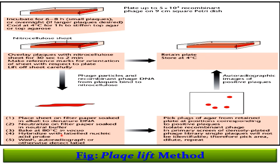Hybridize with a labeled nucleic acid probe. Wash, autoradiograph, and detect the label. Pick the plaque of agar from the retained plate at the position corresponding to the positive plaques. Isolate recombinant phage in the primary screen of the densely plated phage library. Single plaques will not be identifiable, therefore pick the area, dilute, and repeat.